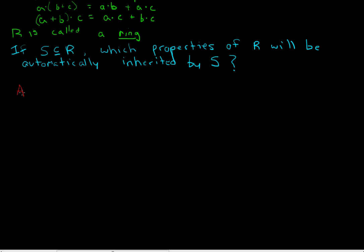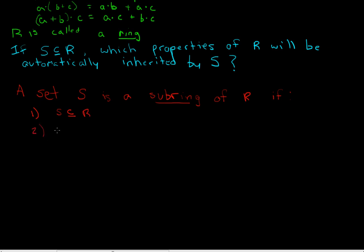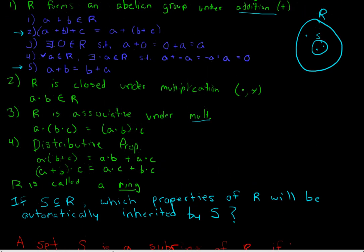A set S is a subring of R — where R is a ring — if: (1) S is a subset of R, and (2) S is also a ring under the same operations as R. To actually verify this, the only things you need to show are both closures, that the additive identity is in S, and that every element has its additive inverse also in the set.